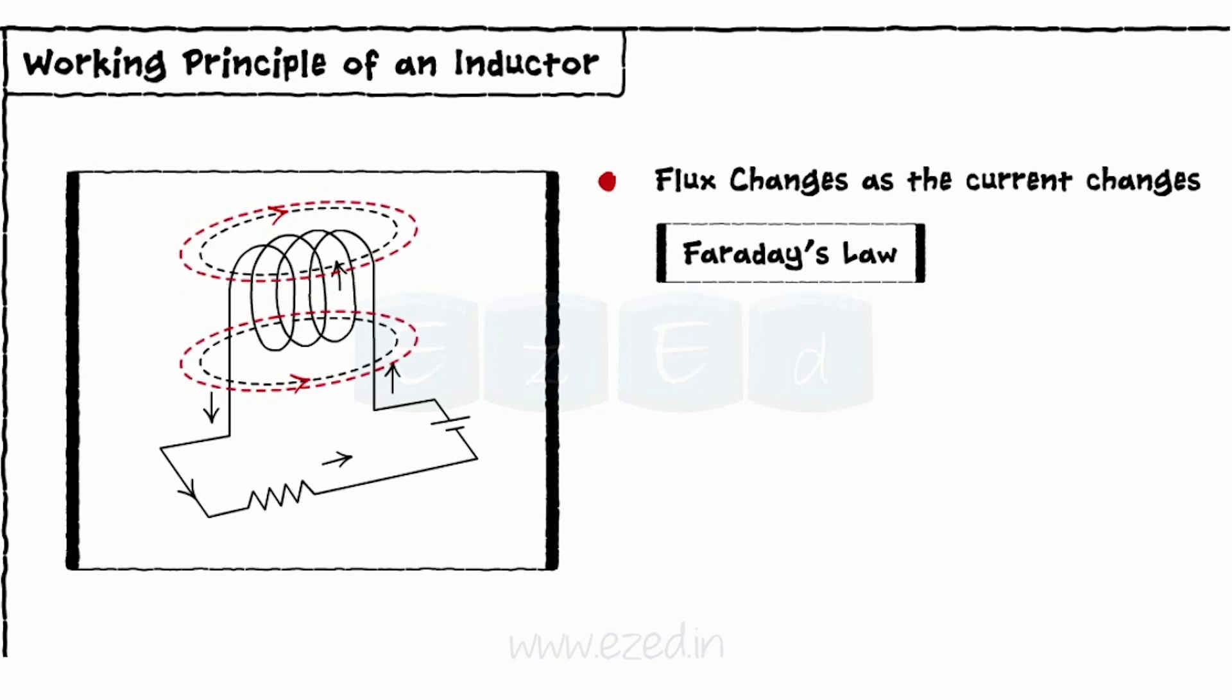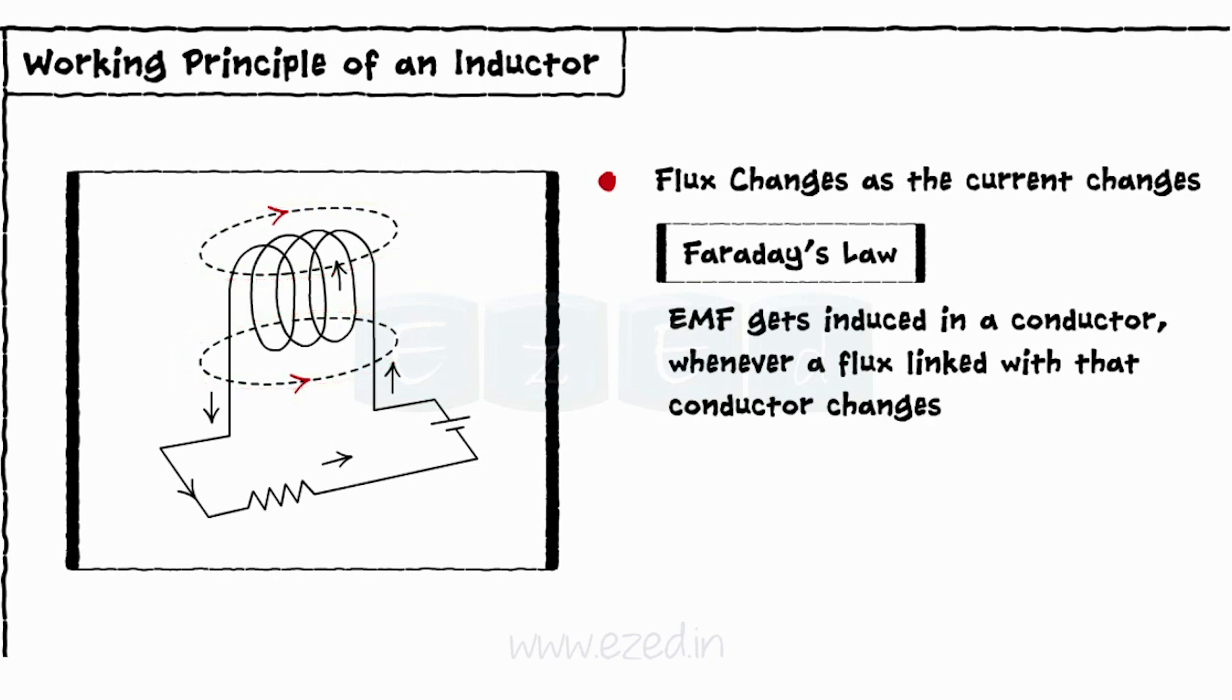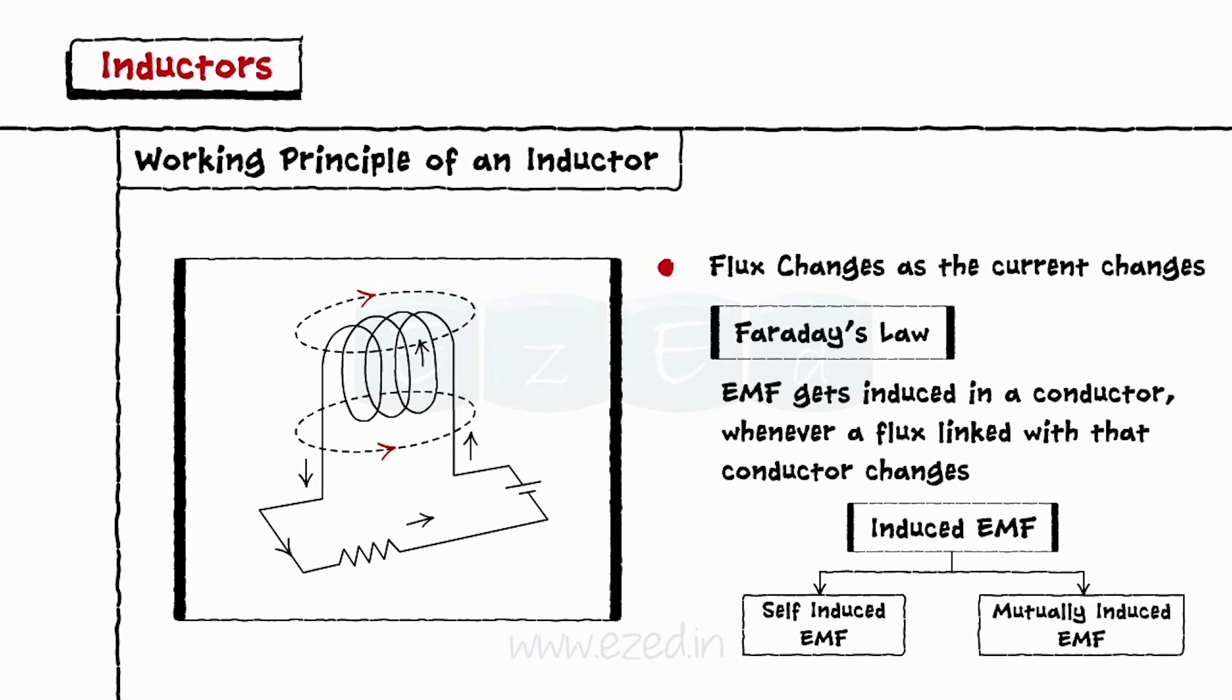According to Faraday's law, EMF gets induced in a conductor whenever a flux linked with that conductor changes. This EMF is of two types such as self-induced EMF and mutually induced EMF.